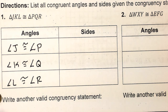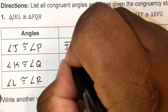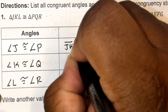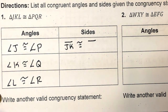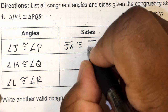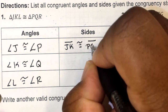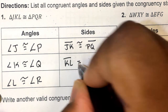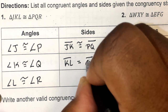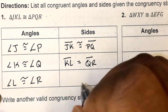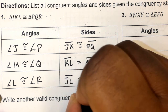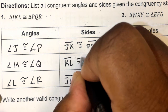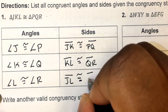Then talking about the sides of my triangles: side JK is congruent to side PQ, side KL is congruent to side QR, and side JL is congruent to side PR. I know that just from looking at this statement — all I'm doing is matching letters.